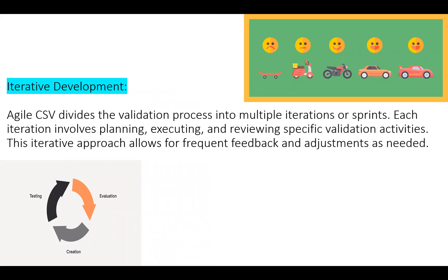First of all, iterative development. Iterative development means small, incremental development work that helps us achieve our future goals. We divide our validation process into multiple steps or iterations so that we can achieve our actual target — with proper planning, execution, and frequent feedback. If adjustments are required, we have the flexibility for that, so we can achieve our target in CSV. This is known as iterative development.